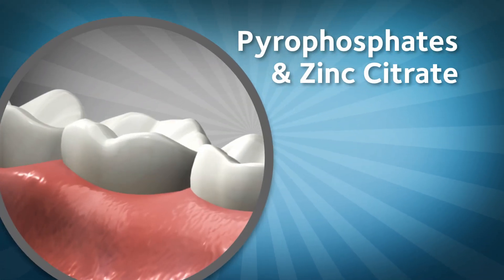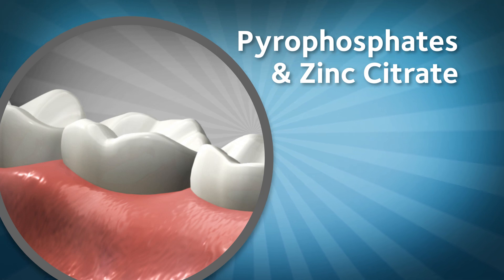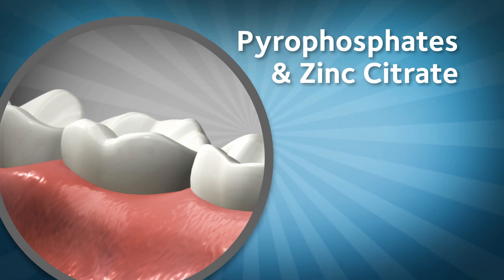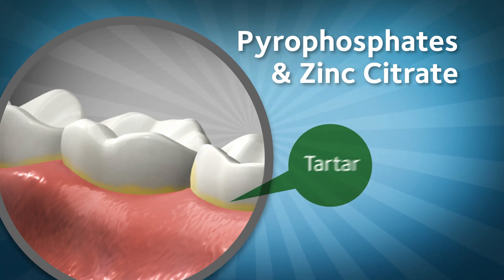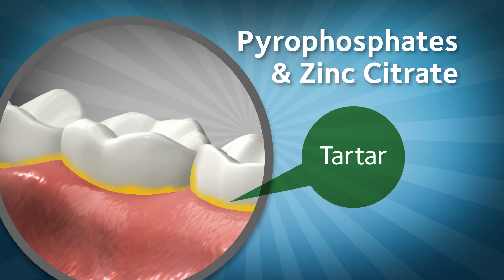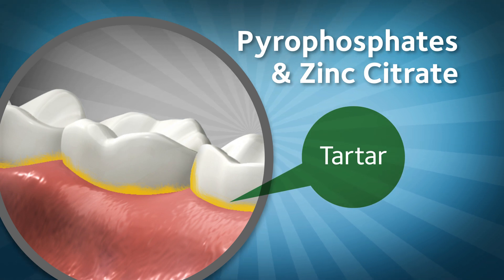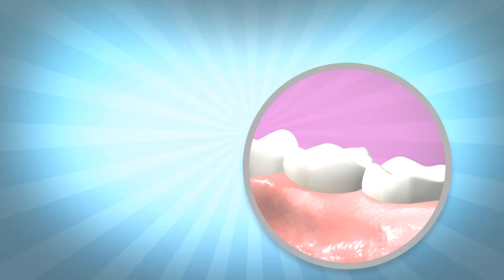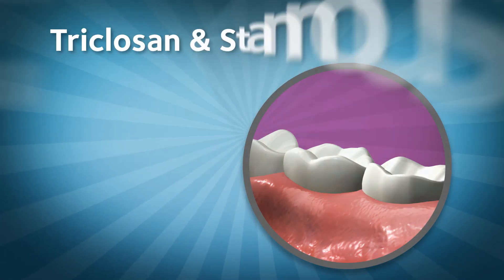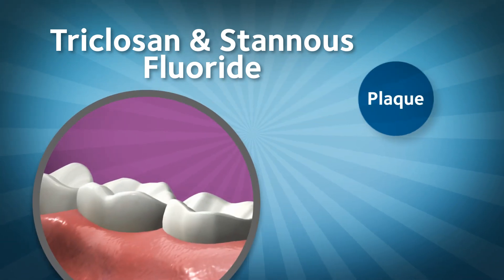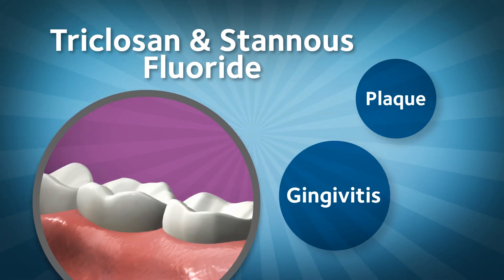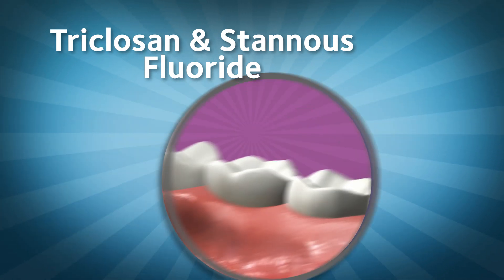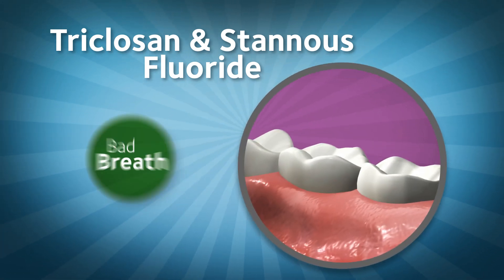Pyrophosphates and zinc citrate help reduce a buildup of hardened plaque called tartar. Once formed, tartar can only be removed by a dentist or a hygienist. Triclosan and stannous fluoride help fight plaque and gingivitis, an early form of gum disease, and can also help reduce bad breath.